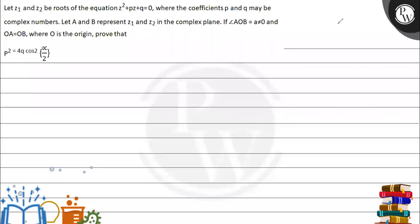Let's solve this question. The question says: let z1 and z2 be two roots of the equation z² + pz + q = 0, where the coefficients p and q may be complex numbers. Let A and B represent z1 and z2 in the complex plane. If angle AOB is equal to alpha (which is not equal to zero) and OA is equal to OB, where O is the origin, we need to prove that p² = 4q cos²(α/2).